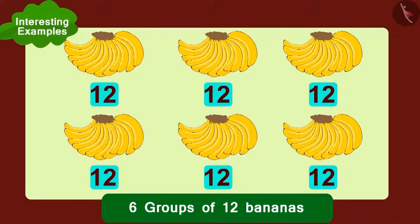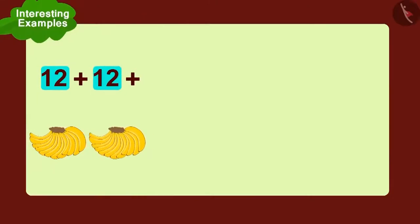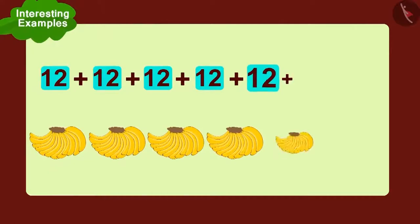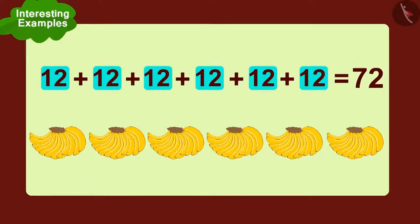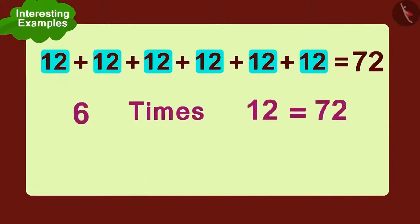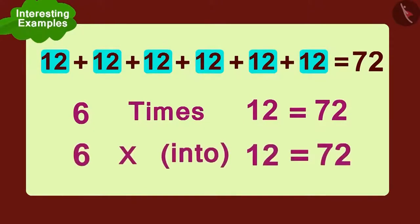Golu had arranged six groups of twelve bananas each. Children, can you write the number of bananas Golu had in the form of multiplication? Twelve added to twelve, again add twelve, again add twelve, again add twelve, and finally add one more twelve. That is seventy-two. We can write this as six times twelve, or six multiplied with twelve.